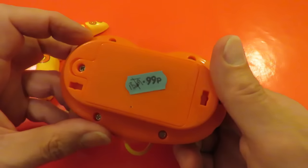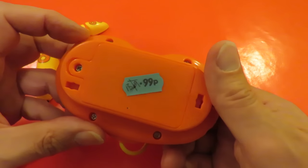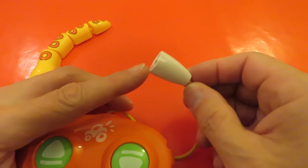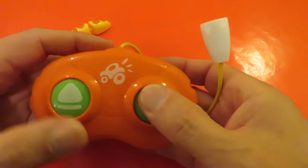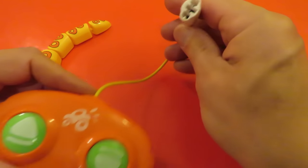This one was marked at 99 pence, but I pointed out that it was supposed to be attached to a little truck. This is the forwards backwards control for a wire-controlled truck.